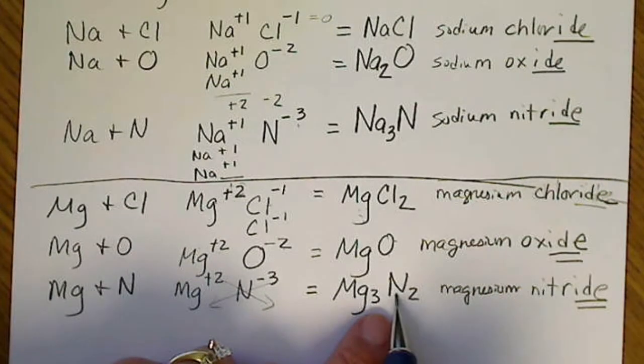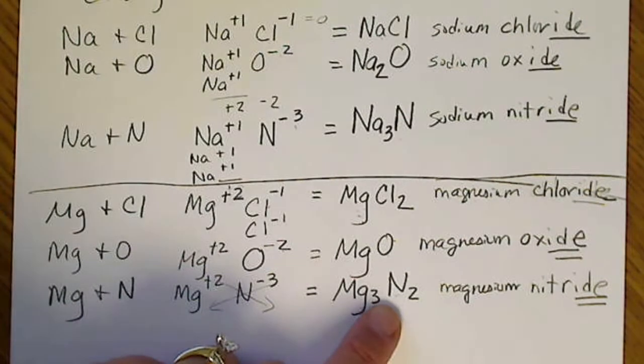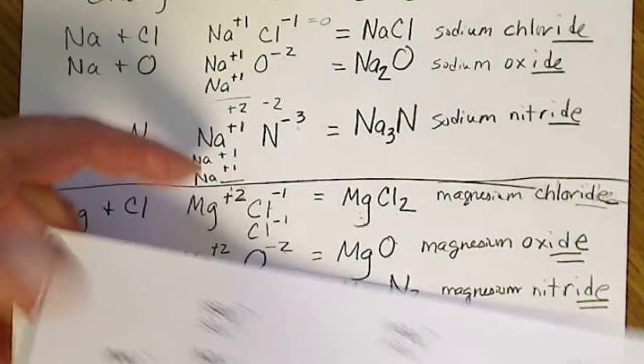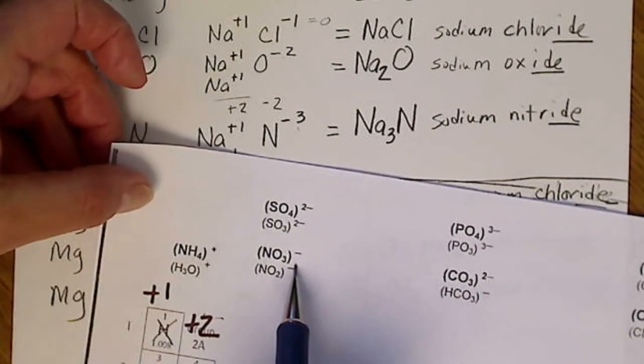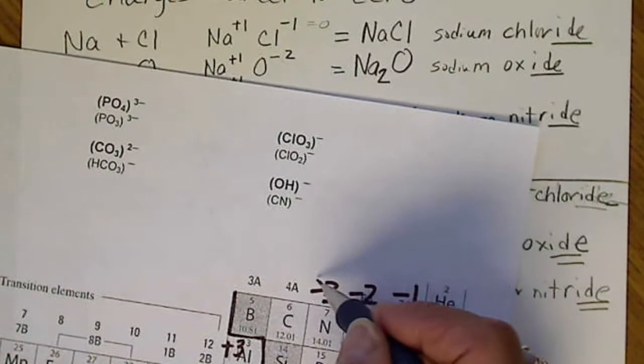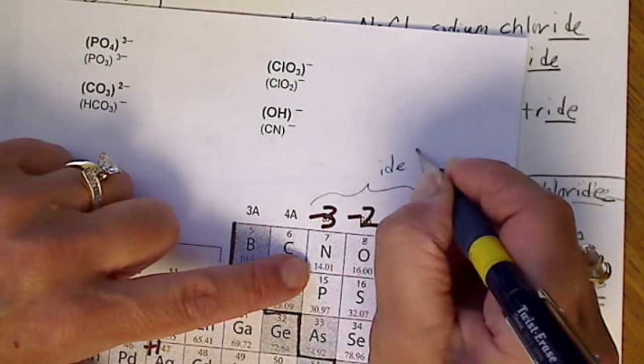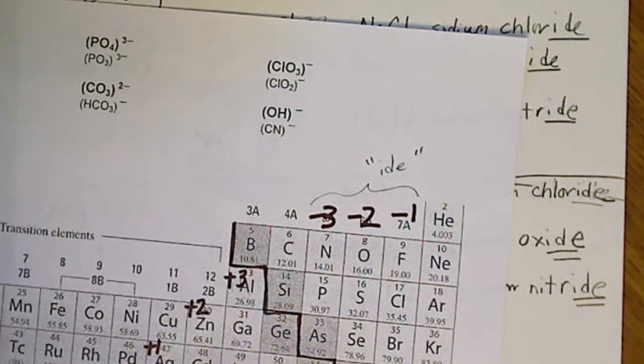So if it's just a symbol from the periodic table, like an N, we're just going to name it nitride. It may end up being a polyatomic ion like this. So we'll worry about that later. If anything that comes from the periodic table is going to end in -ide.